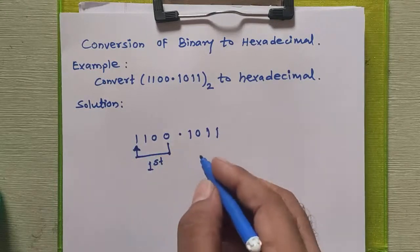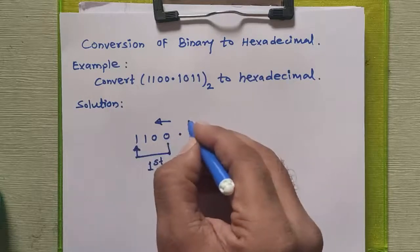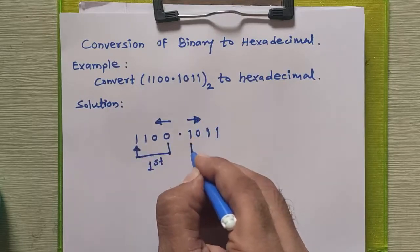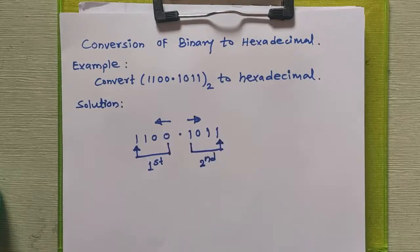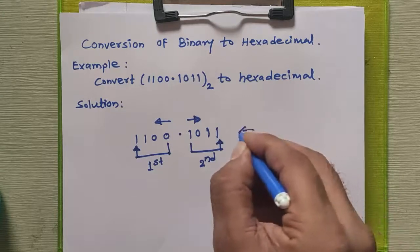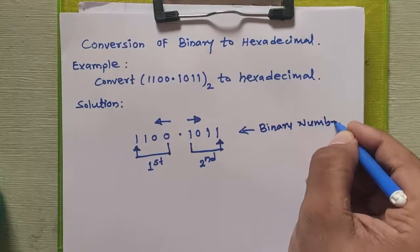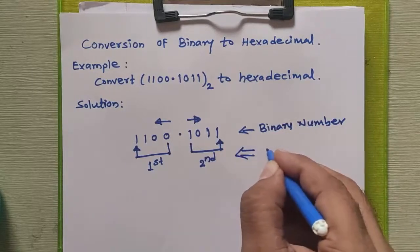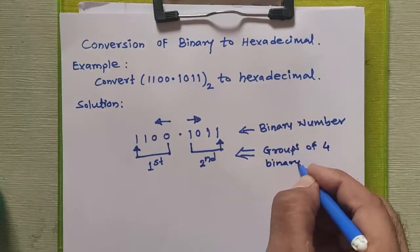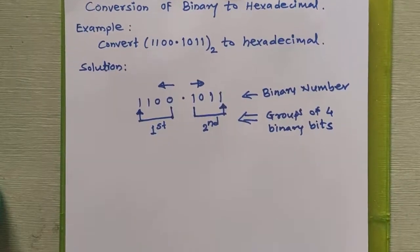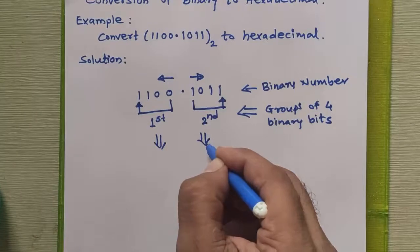Now we move to the fractional part. Grouping for the integral part goes from right to left, whereas for the fractional part it goes from left to right. So 1011 is the second group for the fractional part — a group of 4 binary bits. This is the original binary number given to us, and these are the two groups of 4 binary bits. The next step is to write the hexadecimal equivalent for each group.